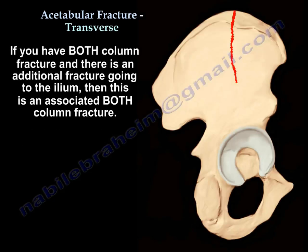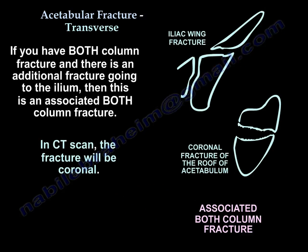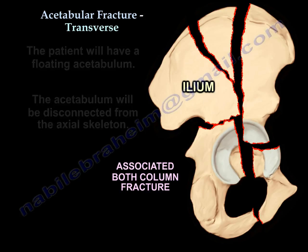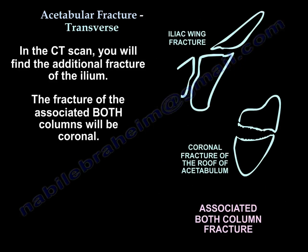If there is an additional fracture extending into the ilium, then it becomes an associated both column fracture. In that case, the patient will have a floating acetabulum — the acetabulum will be disconnected from the axial skeleton. On CT scan, the fracture of the associated both column fracture will appear coronal, and the additional iliac fracture will also be visible.